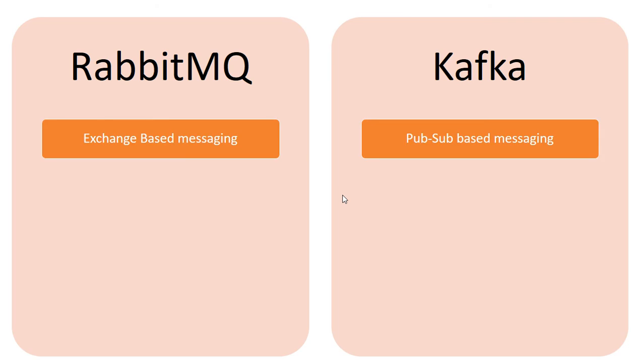The first thing is that RabbitMQ is basically an exchange-based messaging and message broker, while Kafka works with a PubSub mechanism only and is essentially a commit log — it cannot be categorized as a broker. In RabbitMQ, whenever a producer produces messages to be consumed, the messages are not sent directly to the queues; rather they are sent to an exchange, and there is a binding between the exchange and the queues, so messages are routed from the exchange to the queues. There are different types of exchanges available in RabbitMQ like fanout, topic exchange, and header exchange.